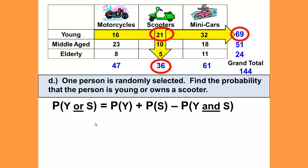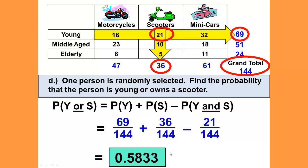And the overlap where you're both a scooter and young is 21. And again, the grand total of 144. So the probability of being young is 69 out of 144, plus the probability of a scooter is 36 over 144, minus the 21 that we would have added twice in the subtotal. So we subtract that 21 out once so that we've only added it that one time. And 69 plus 36 minus 21 still gives us 84 divided by 144, which is 0.5833, and it gives us the same answer.